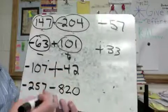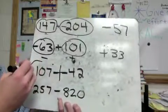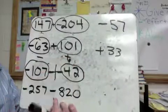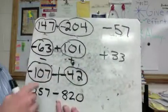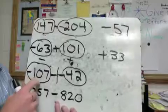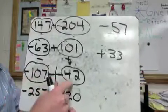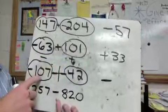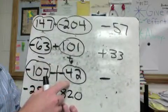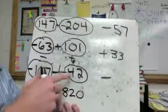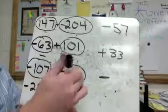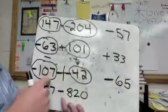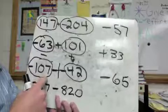Third practice problem: not formatted correctly, but we quickly turn the double negative into a big plus. Now we have negative 107 and positive 42 — more negatives than positives, so the answer is definitely going to be negative. After subtracting or canceling out, 107 minus 42 is 65, and since we have more negatives, the answer is negative 65.